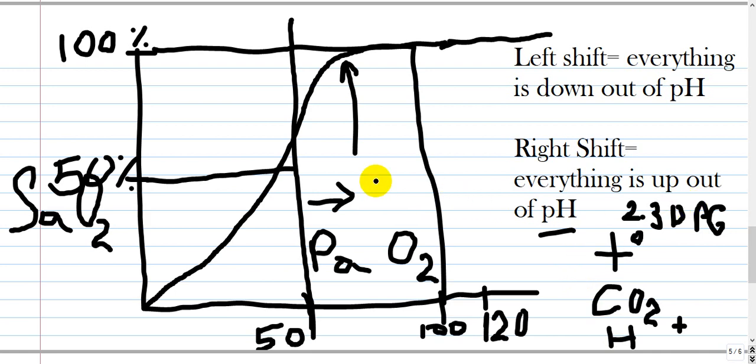In the opposite position, when the oxyhemoglobin curve is going to the left and P50 is decreased, you will have everything down out of pH. If pH is alkalotic or represents alkalosis, hydrogen will be low, CO2 will be low, temperature is low so hypothermia, and 2,3-diphosphoglycerate will be also low.